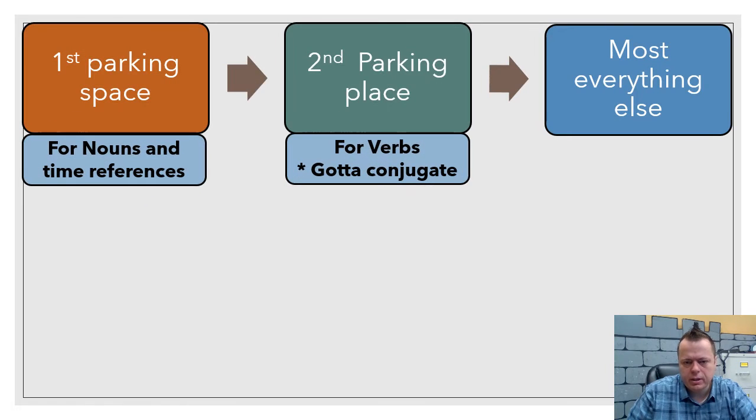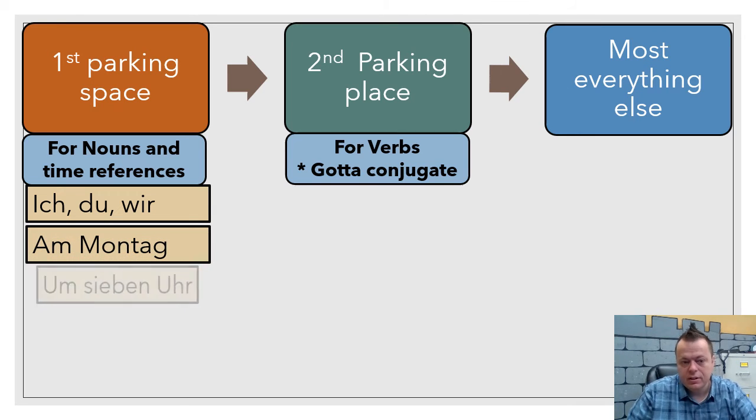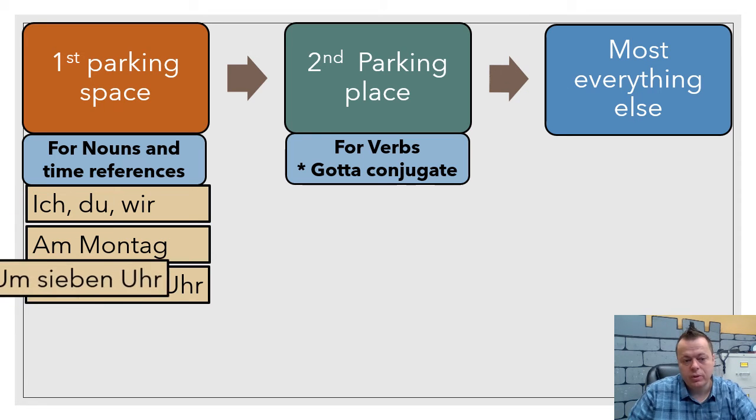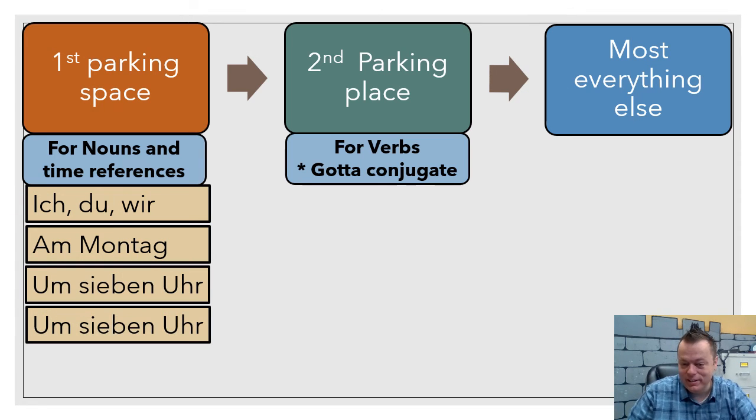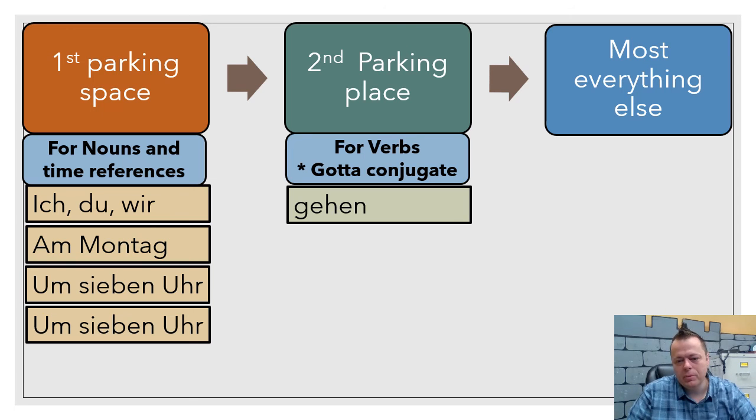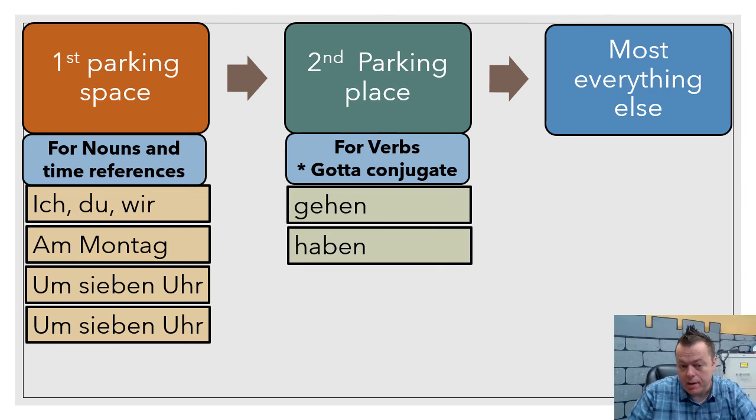So let's take a quick peek at this again. We're focusing on the first parking space and the second parking space. In the first parking space, we can have ich, du, wir. We could have am Montag. We could have um sieben Uhr. We could also have um sieben Uhr again. Herr Dab just loves to double up. Let's see what happens though. With the verbs, they have to conjugate. The conjugation is pretty simple, but we're putting in these in what's called the infinitive form, just there with the -en. There's haben, to have; sein, to be.